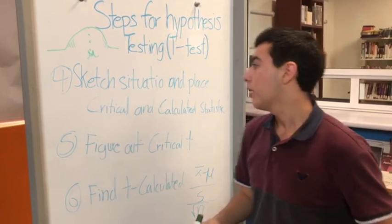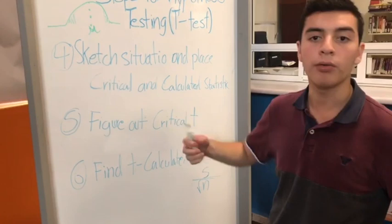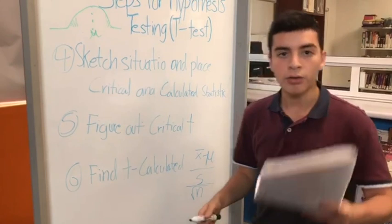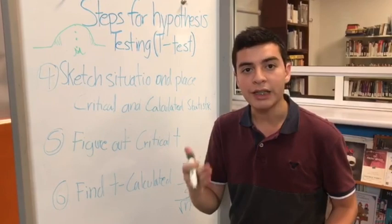After that, we have to calculate the critical T. In this case, it's a critical T because it's a sample. We're using a sample, not the entire population. In order to calculate the critical T, we'll have to use the T table in order to find it.